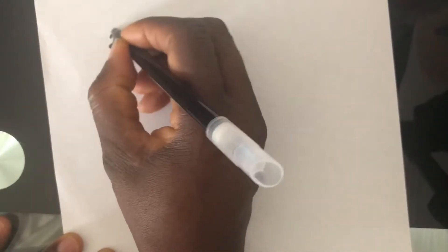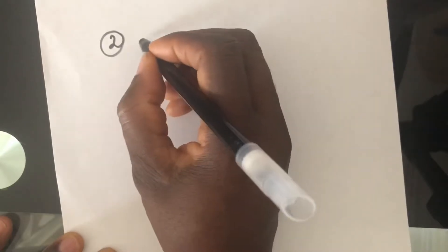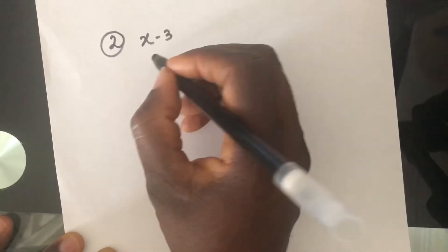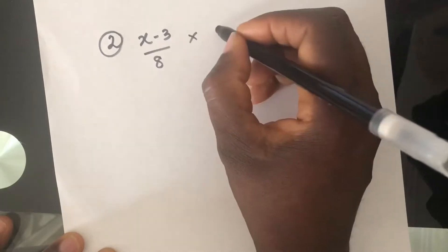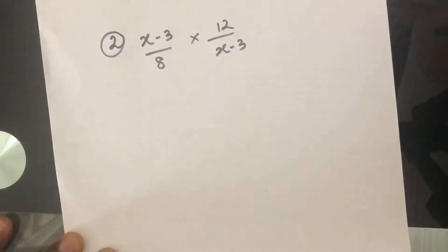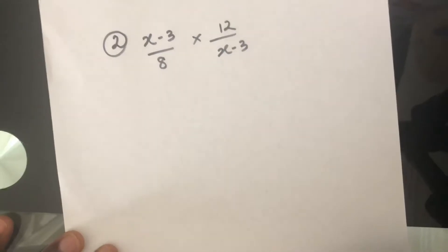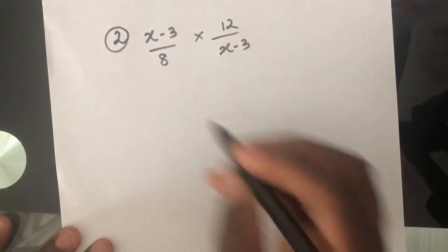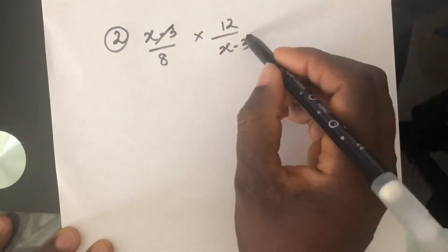How about something like this? X minus 3 over 8 times 12 over X minus 3. Again, if I use the idea of cancelling down, then X minus 3 can cancel X minus 3.